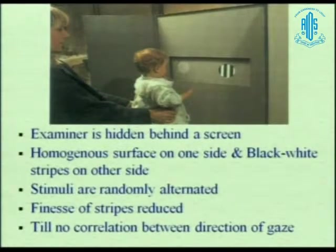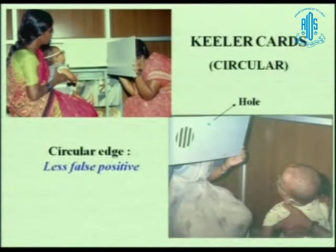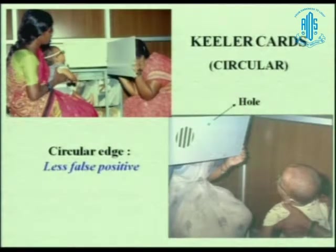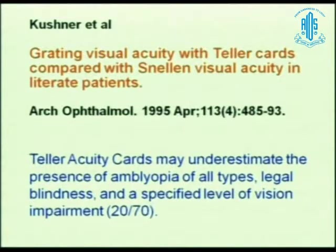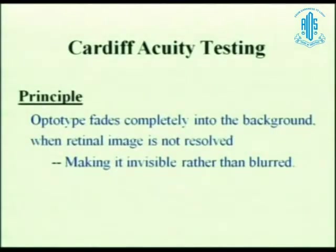Finer stripes mean better visual acuity, and there is no correlation with the direction of gaze — sometimes the kid looks right, sometimes left. An article by Kushner published in Archives of Ophthalmology in 1995 said that Teller acuity cards may underestimate the presence of amblyopia, meaning they overestimate visual acuity when compared to Snellen's. Normatives are different for different test patterns, so Teller acuity cards would overestimate the amount of visual acuity. There is also an article by Dr. Sharma in IJO comparing Teller acuity cards with Cardiff acuity testing.